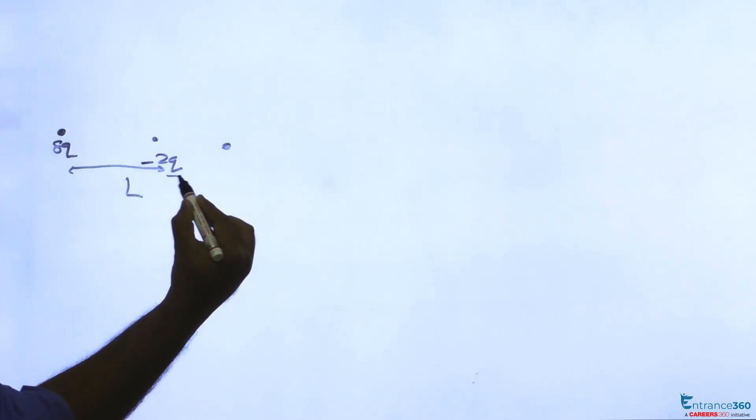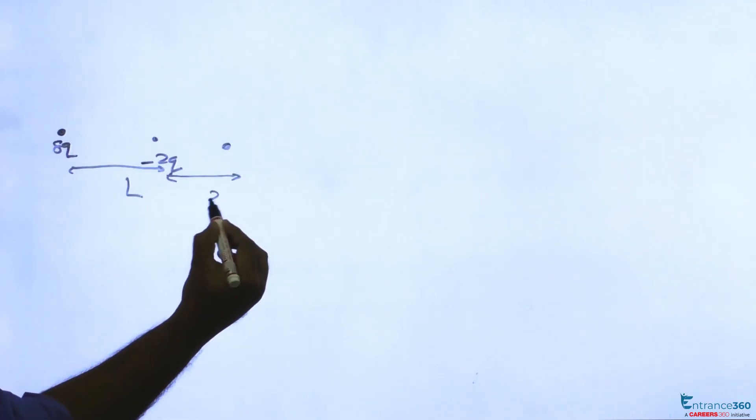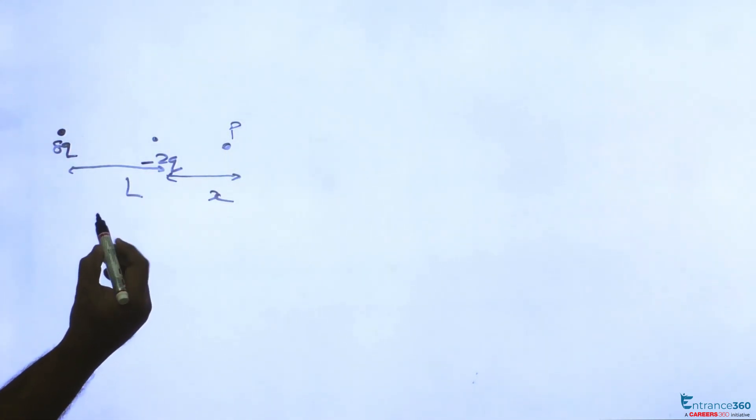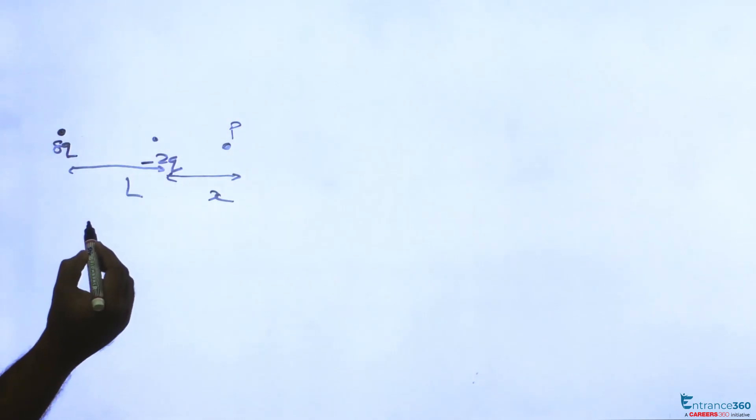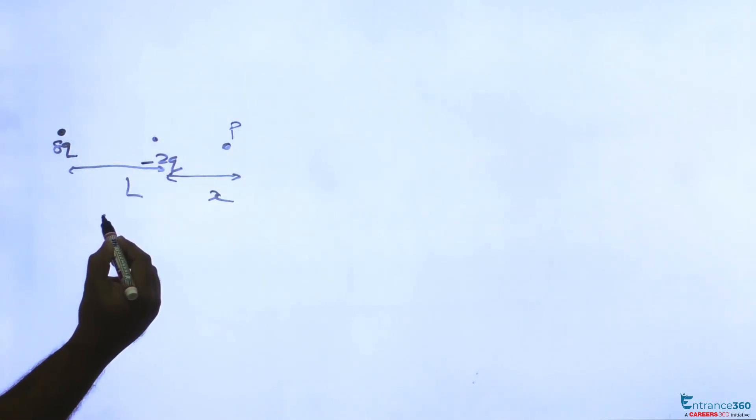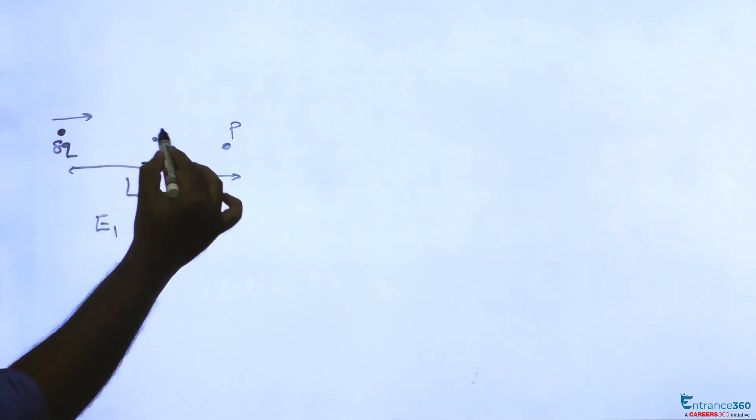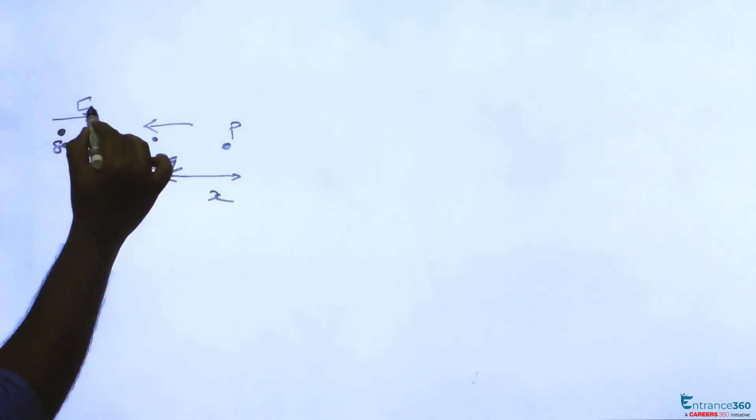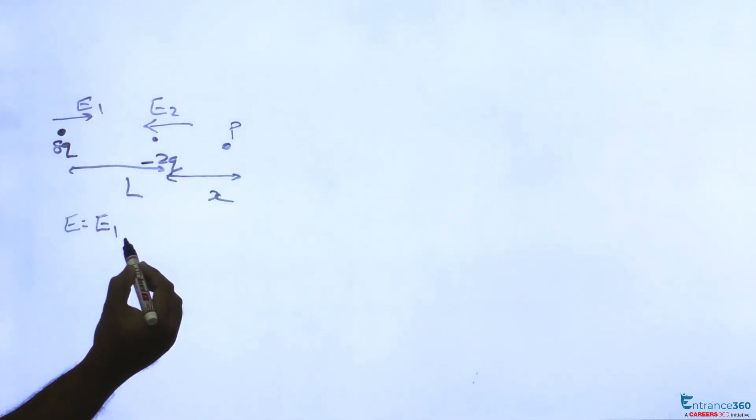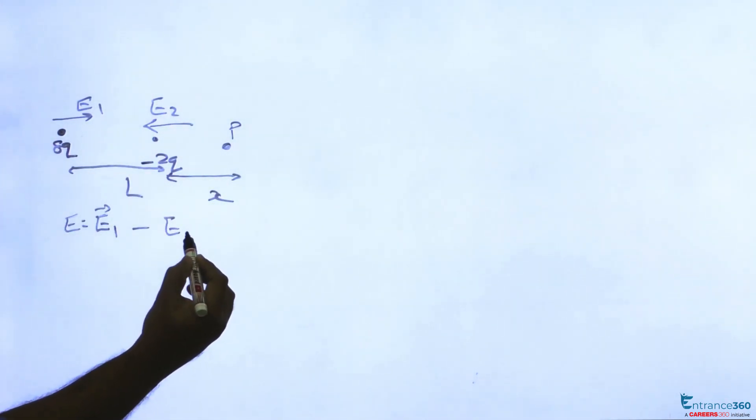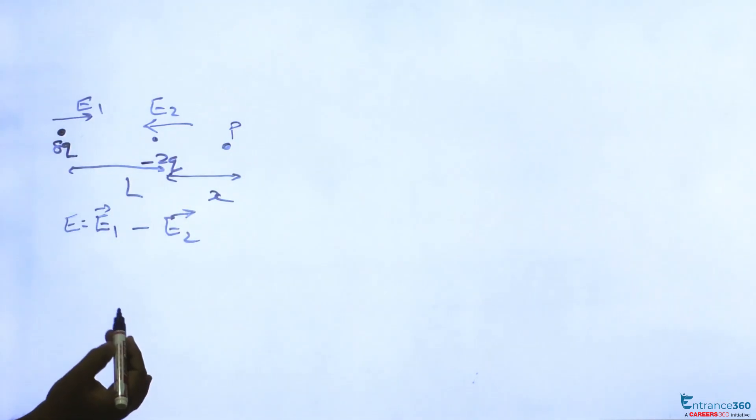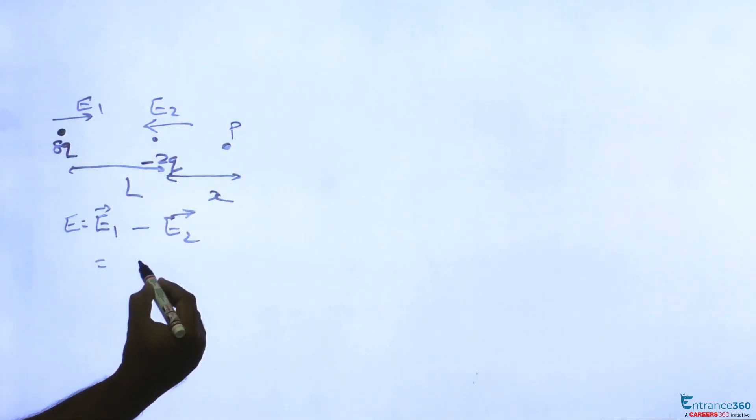Let's say the distance is x, so say it is point P. Now electric field due to 8q charge, let's say it is E1, which will be in this direction. Due to minus 2q will be in this direction, say it as E2. So net electric field equals E1 minus E2.